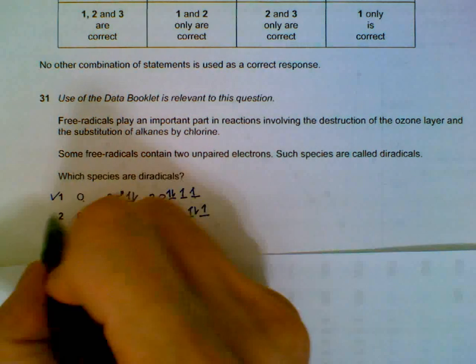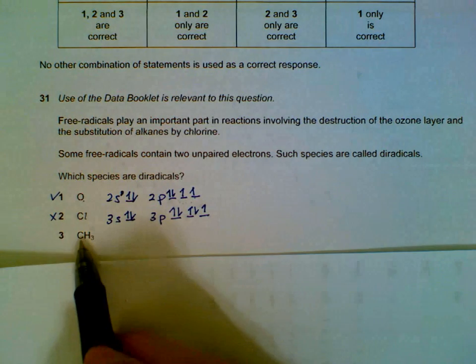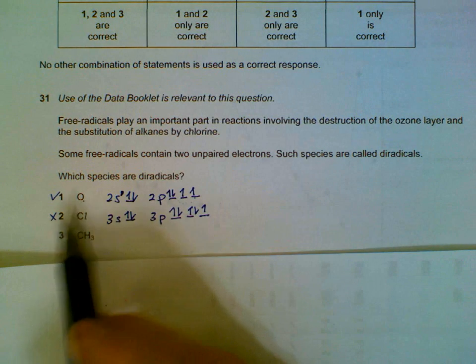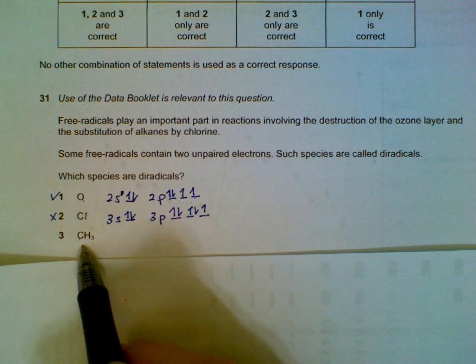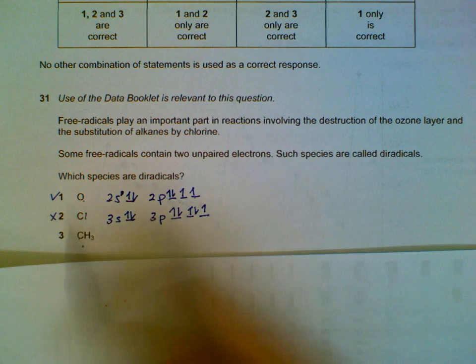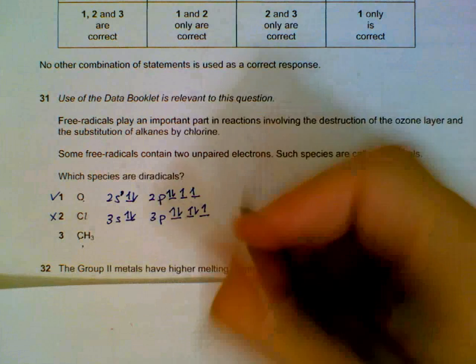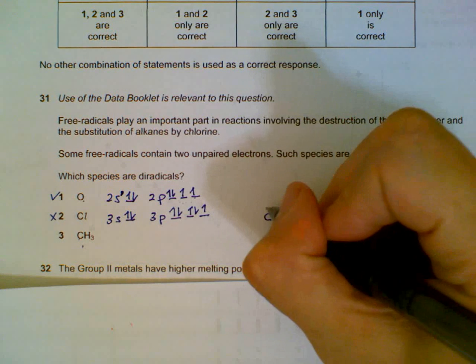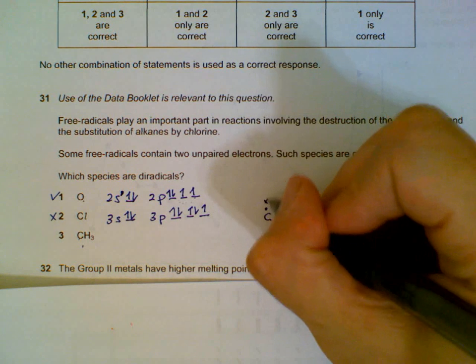That essentially rules out three already because there's no one and three combination, but we can check and see what CH3 is. CH3, I'll draw it in the shape of the bonding electrons, the outer electrons.